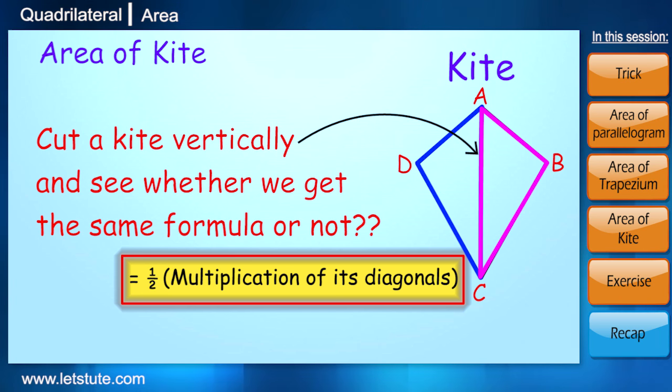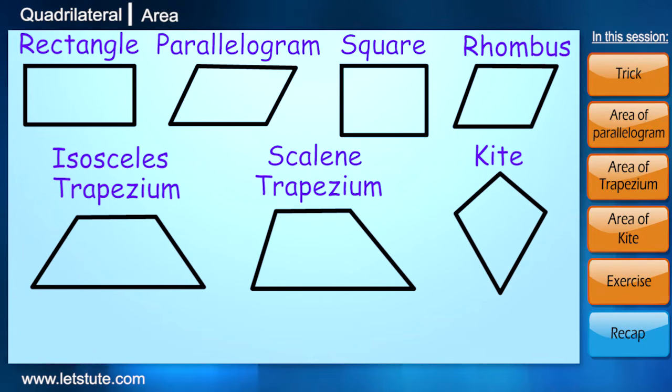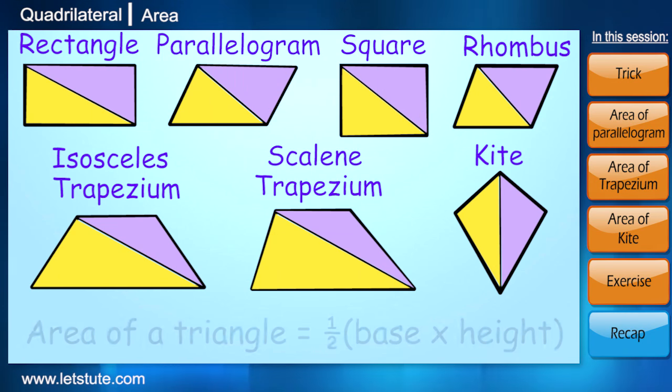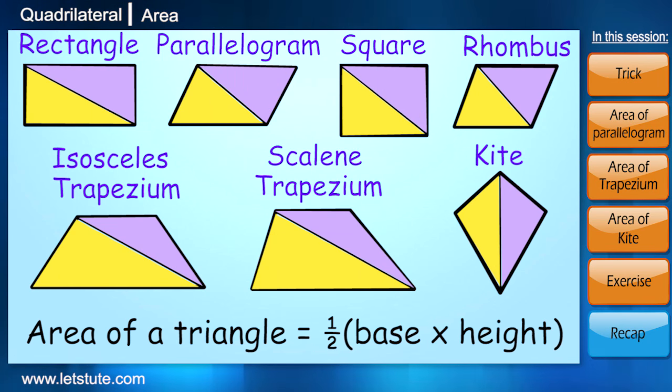By now you need not remember any formula. Just divide them into two triangles and find the area by using half times base into height.